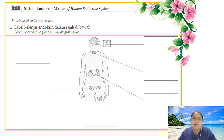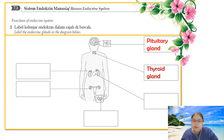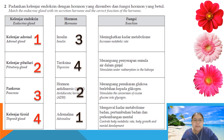Today we want to discuss the homework for Chapter 7.1. The first question has a diagram of the endocrine system. The labels are: pituitary gland, thyroid, pancreas, adrenal gland, ovary (for female), and adrenal gland. So we have six endocrine glands for the human body.